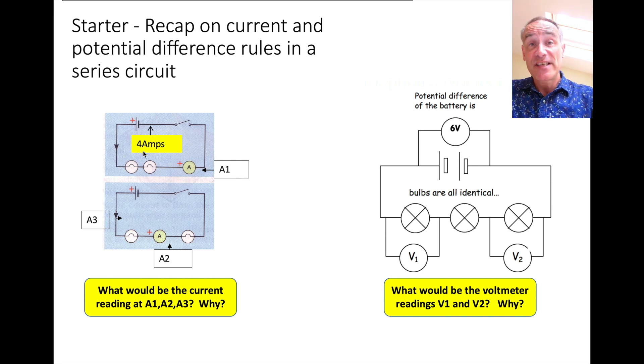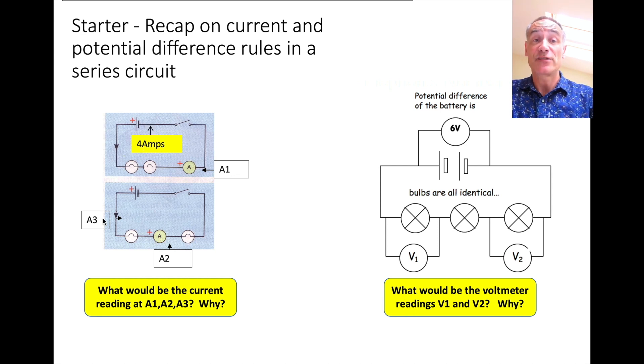So in series, current is the same. If it reads 4 amps there, both of those ammeters are also going to read 4 amps.